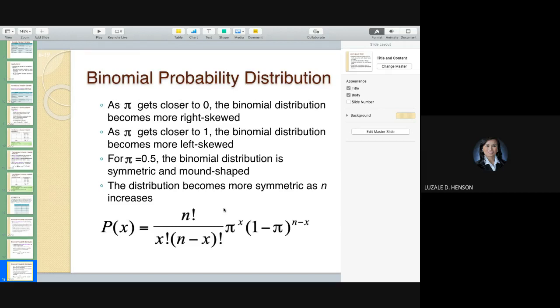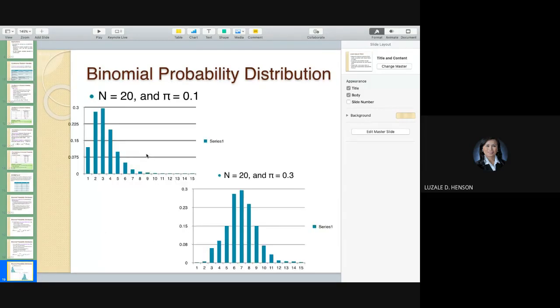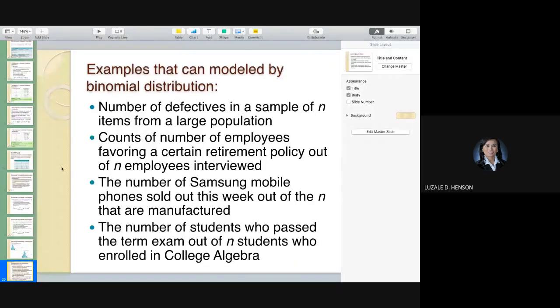This is how it is illustrated: as your pi gets closer to 0.5, as your pi gets closer to 0, as you can see, it is right skewed. As it gets closer to 0.5, in this case it's kind of normal, it's kind of bell-shaped. Here are examples that can be modeled by binomial distribution.